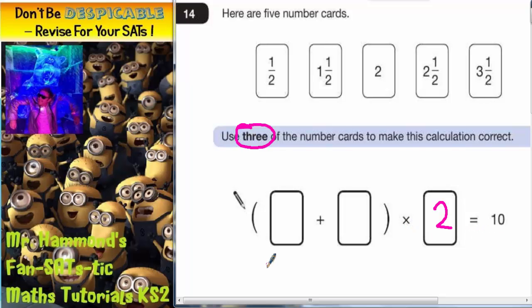So basically these two boxes need to make five, because whatever's in the brackets has to make five so that when we times it by two we get ten.